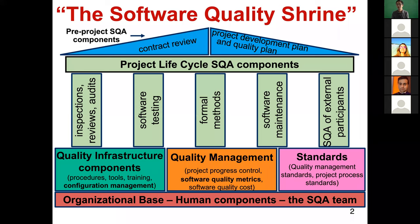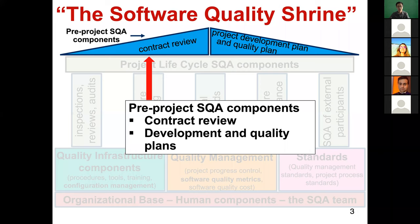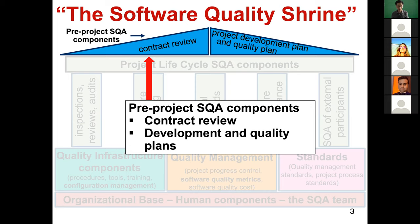From last lecture, this figure is what you want to remember — this is the architecture for software quality assurance. There are several components. The first part is the pre-project SQA component. Before the project starts and before software quality assurance activity starts, we need to make some plans. This involves contract review and development and quality plans. In contract review, we negotiate with our customers and review our proposals to make sure the contract is correct and they agree with the proposal. We also develop a management plan to guide the development process and make a quality plan to guide the quality assurance activities.